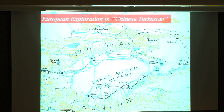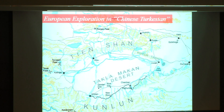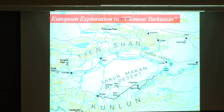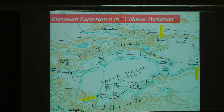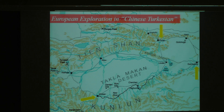Over time, many expeditions were launched in so-called Chinese Turkestan that uncovered cave temples and monasteries on the slopes of the Tien-Shan and Kunlun Mountains — sites such as Hotan in the south, the Turfan area in the northeast, and of course the very famous site of Dunhuang, with its well-known Buddhist settlement.